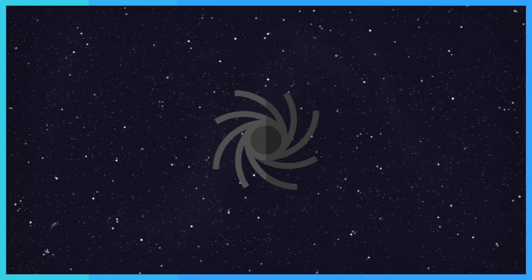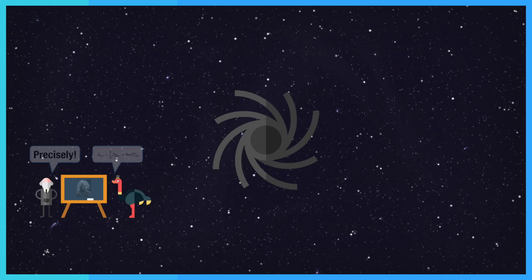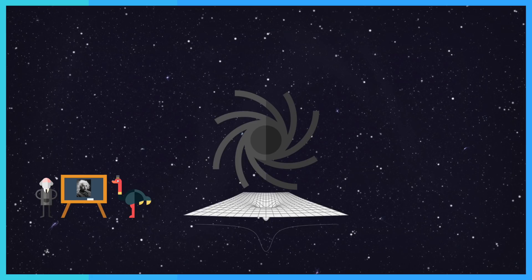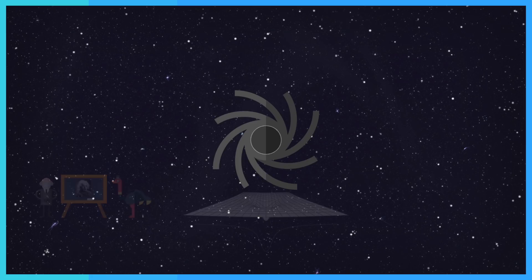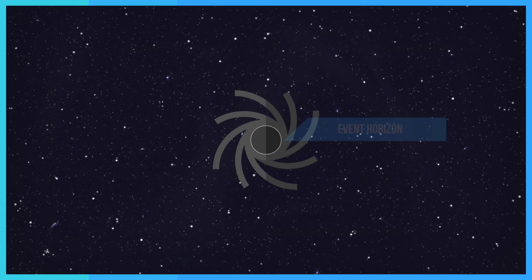A black hole is a region of space from which nothing, not even light, can escape. According to the general theory of relativity, it is a result of the curving of space-time caused by being composed of dense mass. Around a black hole, there is a position of no return. This is known as the event horizon.